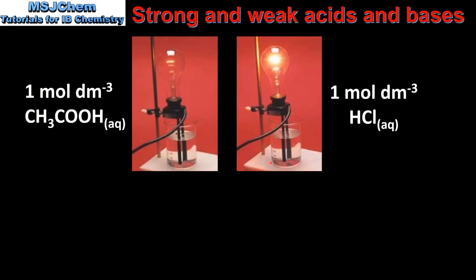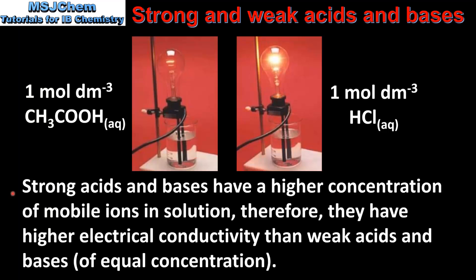This means that the solution on the right, the strong acid, has a higher electrical conductivity than the solution on the left, which is a weak acid. The reason for this is that strong acids and bases have a higher concentration of mobile ions in solution, therefore they have higher electrical conductivity than weak acids and bases of equal concentration. To summarize: strong acids and bases have higher electrical conductivity than weak acids and bases. Note that in each of these methods we are comparing strong and weak acids and bases of equal concentration.